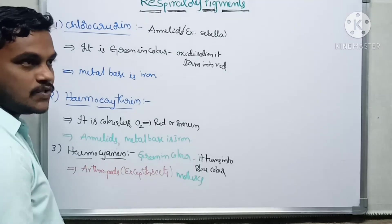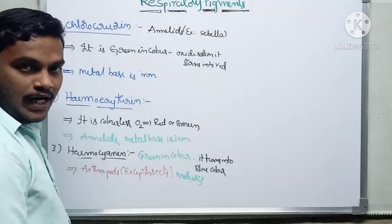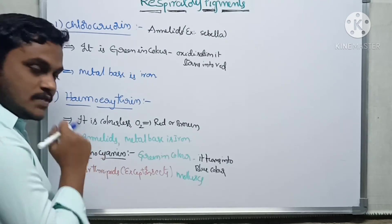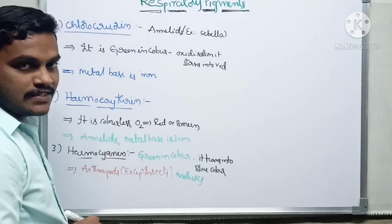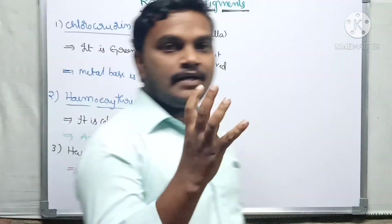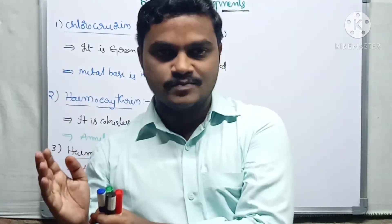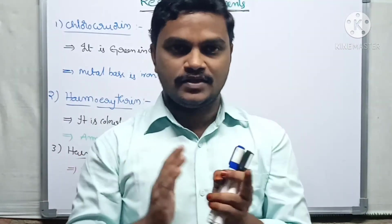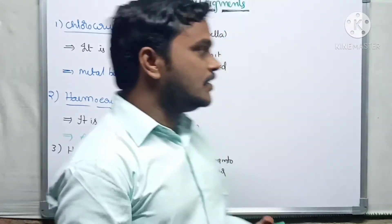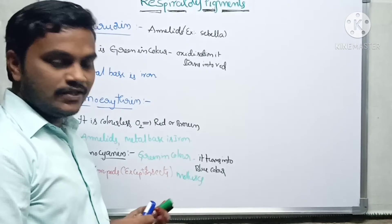Now, regarding the metal base for hemocyanin: we will look at these pigments and match them in objective-type questions. We have a few pigments, their colors, and their organisms to match. This is useful even for vertebrates and invertebrates comparisons.